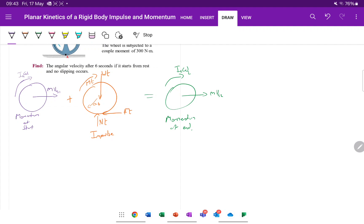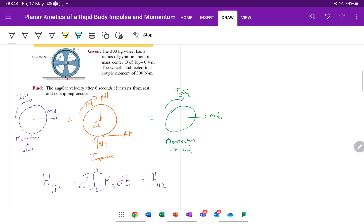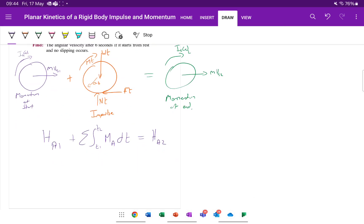So we can say for the, thinking in terms of angles, the angular. Thinking in terms of the angular direction. We can say the angular momentum at the start plus the sum between the start and the end of any impulses that are applied. Any moments that are applied, turning moments, so turning impulses, moments applied about A with respect to time is equal to the angular momentum at the end.